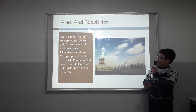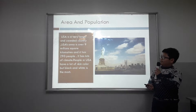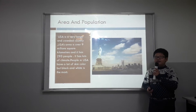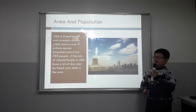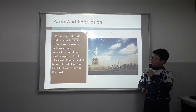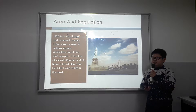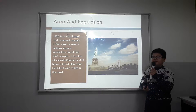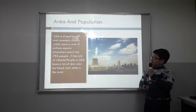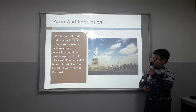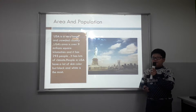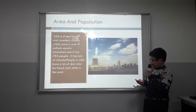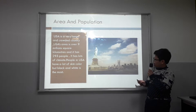The first is area and population. The USA is a very large and crowded country. The USA area is over 9 million square kilometers, and it has 293,000 people. It has a lot of climate, and people in the USA have a lot of skin colors, but black and white are the most. This is a picture of a city in the USA.